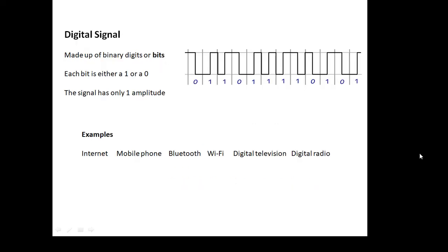A digital signal, however, is made up of binary digits or bits. And a binary digit is either a one or a zero. So a digital signal is either one or zero. It only has one amplitude. It's either on or off. It's a binary thing, a one or a zero.